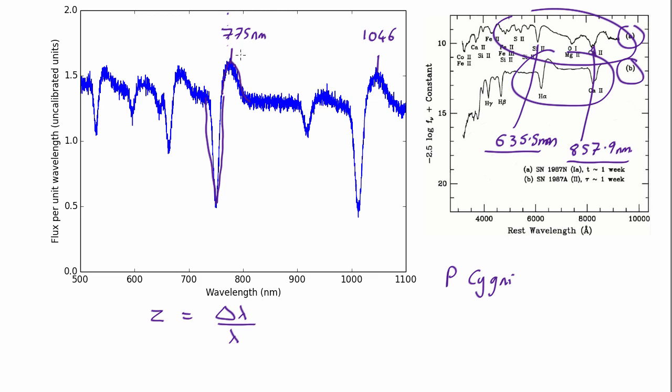So in the case of this line we can say the wavelength 775 minus where it should be 635.5 all over where it should be 635.5 comes out as 0.22 so it's got a redshift of 0.22.